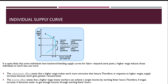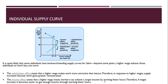The income effect is the second effect acting simultaneously. As income goes up, the possibility of achieving your target income can be reached while working less. So what happens is that at very high wages — let's call that W2 — workers offer less work because they are more interested in leisure, since their target income has already been achieved.